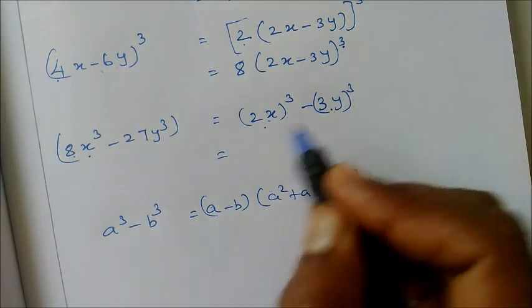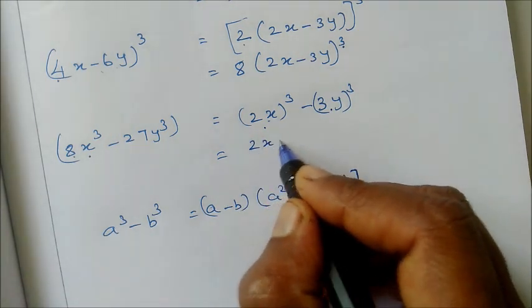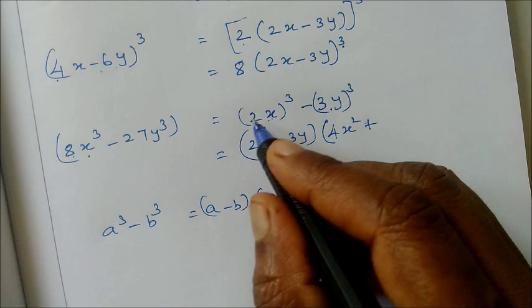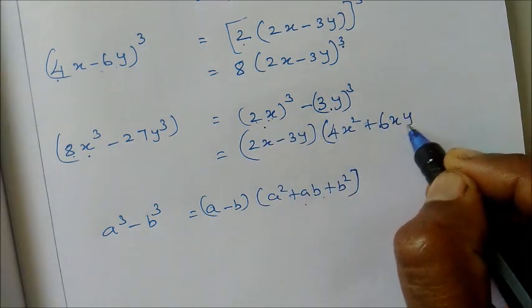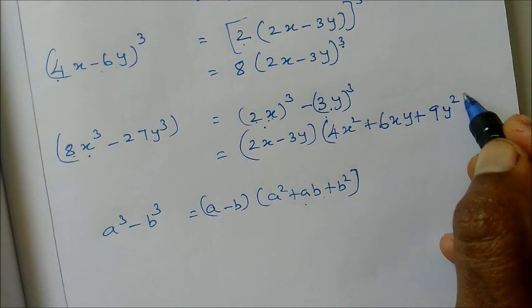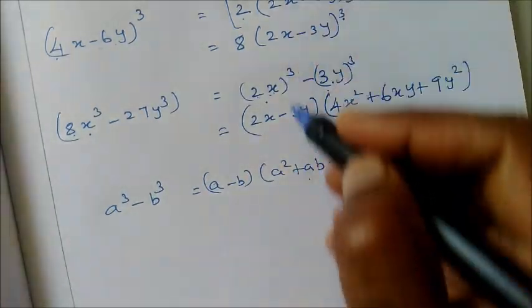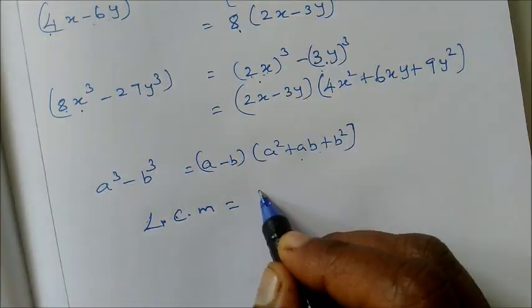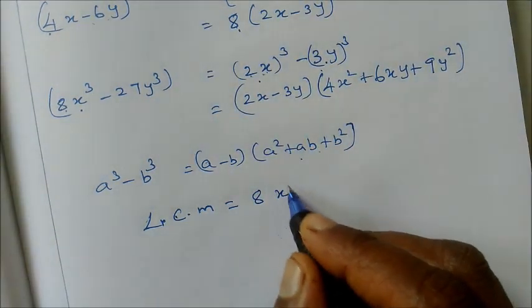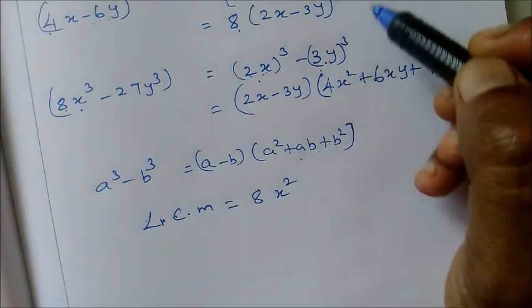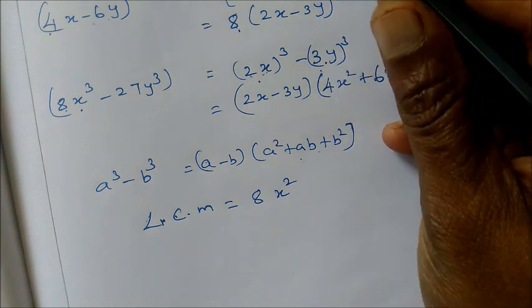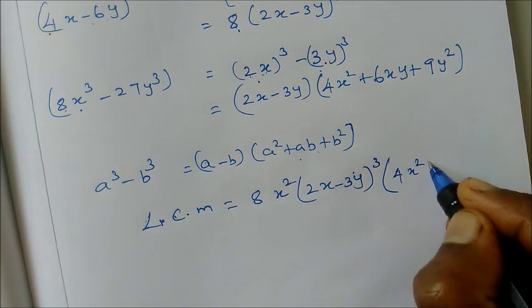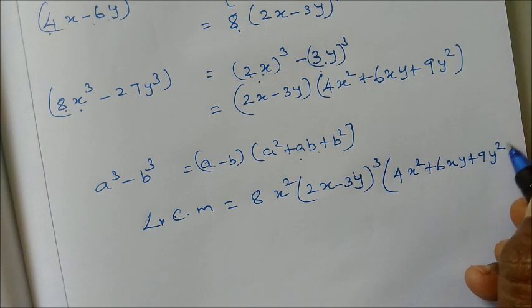A is 2X, B is 3Y. So 2X minus 3Y into A square is 4X square plus AB plus B square. The common term is 2X minus 3Y. For LCM, we take the higher power. So the LCM is 8x square into 2X minus 3Y. Thank you.